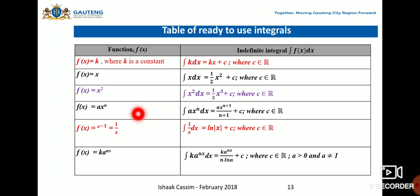Next and finally, if f(x) = ka^(nx), then ∫ka^(nx)dx = k·a^(nx)/(n·ln(a)) + C, where C ∈ ℝ, n > 0, and a ≠ 1.